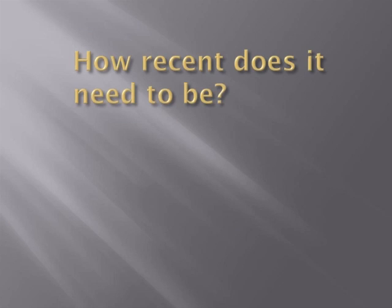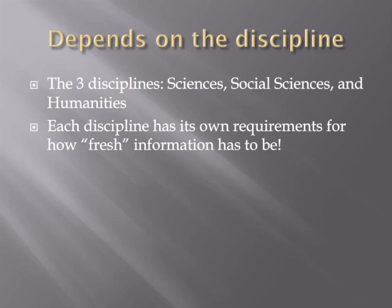Now that you have an idea of how to judge the age of the information in an information source, you need to know how to use that for your research. Each of the three big academic disciplines has its own standards for timeliness or currency of information sources. The three disciplines are the sciences — including mathematics, biology, chemistry, physics, astronomy, ecology — and the applied sciences, like engineering, medicine, and computer science.